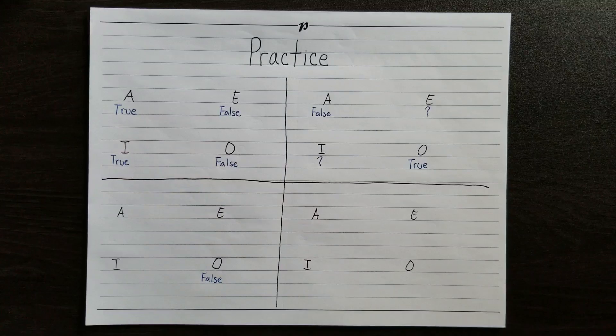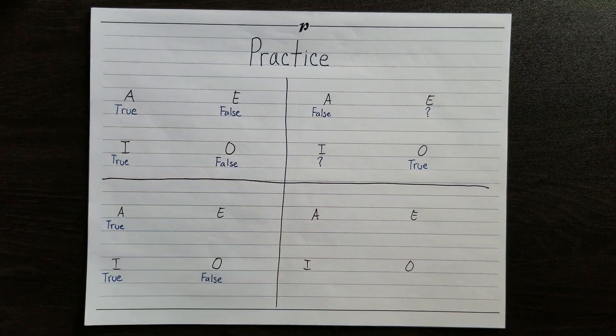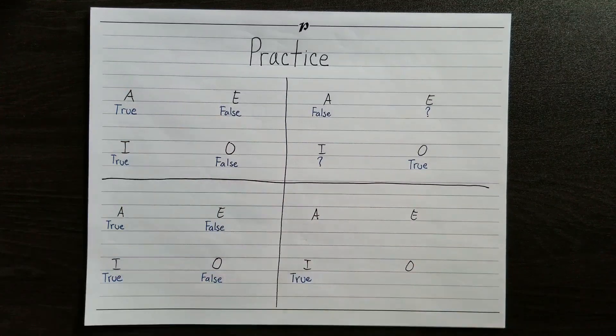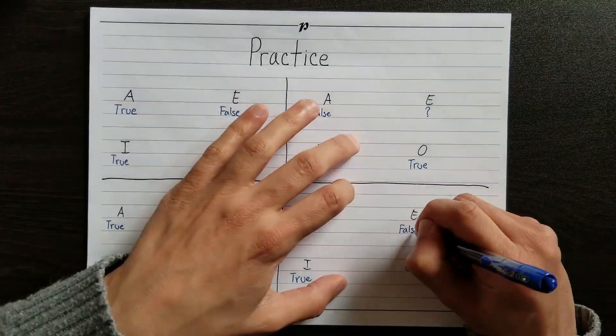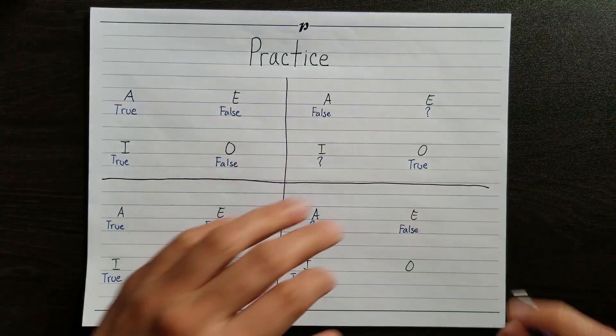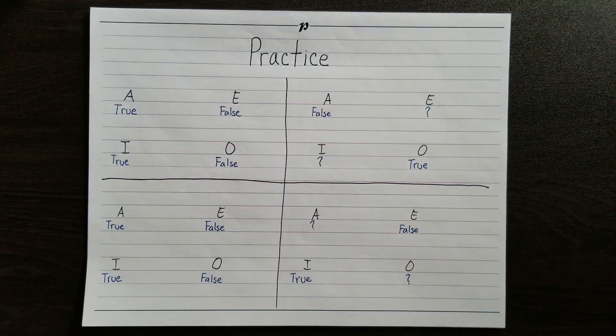Let's say O is false. If O is false, then its subcontrary I must be true, since they can't both be false. We'll also know that A must be true, since A is O's contradictory. And we'll know that E must be false, since E is O's superaltern and O is false. Finally, let's say I is true. Since I is true and A is I's superaltern, we can't know anything about A. I's contradictory E will have to be false. And we won't know anything about I's subcontrary O. To get more comfortable with the traditional square of opposition, just place the letters in the right positions, give one a truth value, and see if you can consistently infer the truth values of the others.